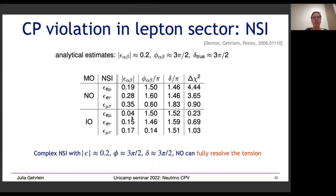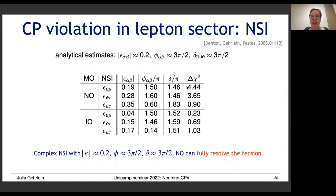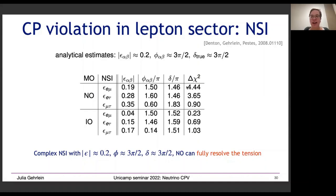Comparing our numerical results to the analytical estimates: we predicted |epsilon| ≈ 0.2, phase ≈ 3π/2, and true delta ≈ 3π/2. The numerical fit confirms this — the best fit is achieved with magnitudes around 0.2, phases near 3π/2, and true delta ≈ 3π/2. In total, introducing NSI gives an improvement of delta chi-squared = 4.44 over the Standard Model. The best fit is achieved with epsilon_emu in the normal ordering; for inverted ordering the improvement is only delta chi-squared ≈ 1.